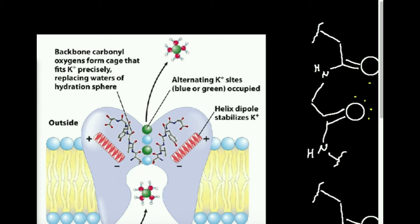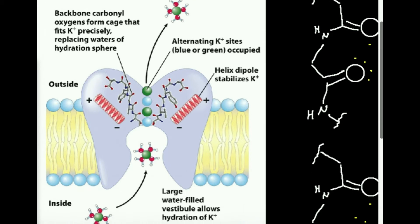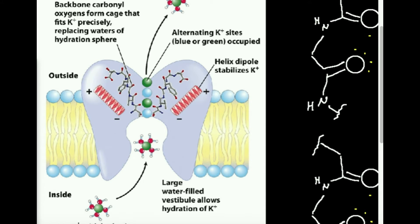The specific topic we're going to look at here is a potassium channel, or just in general an ion channel. Looking at this picture you can pretty well see it. This right here is a potassium ion. These are all potassium ions, and you see that potassium is present a lot on the inside of the cell, and it goes through the channel and out to the outside of the cell.